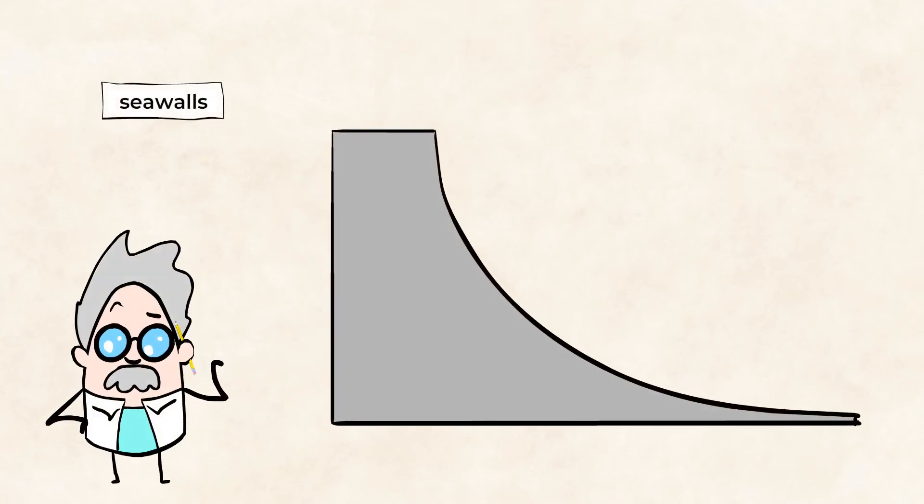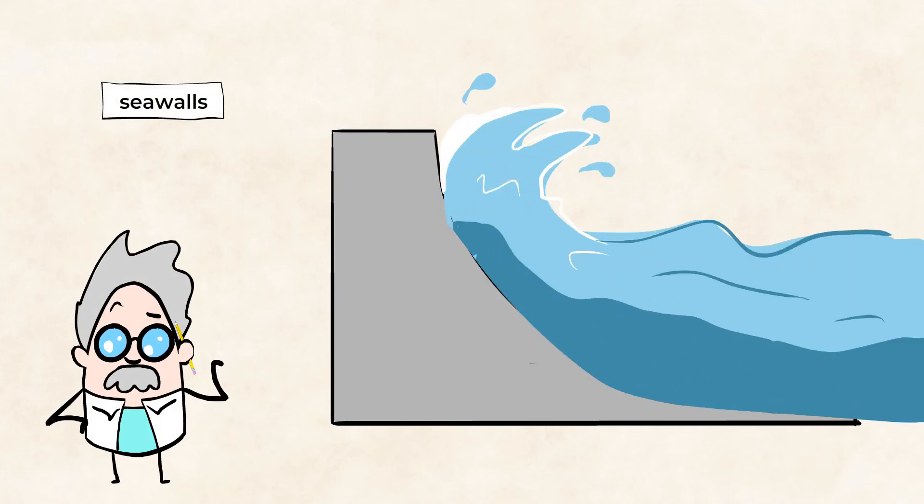Seawalls have curved surfaces and are built along beaches to block waves or even send them back to the ocean. Huh, how cool is that?